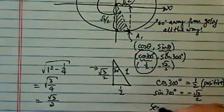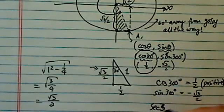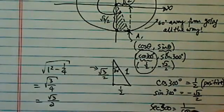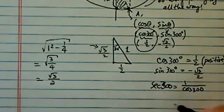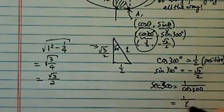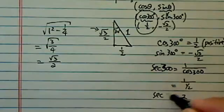And then secant 300 is 1 over cosine of 300, because secant theta is 1 over cosine theta. So this one is equal to 1 over 1 over 2, and secant of 300, therefore, is equal to 2.